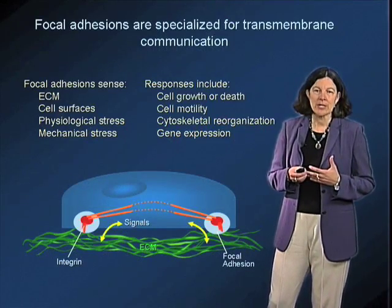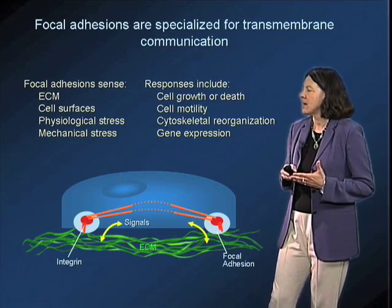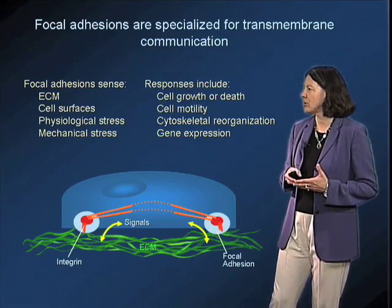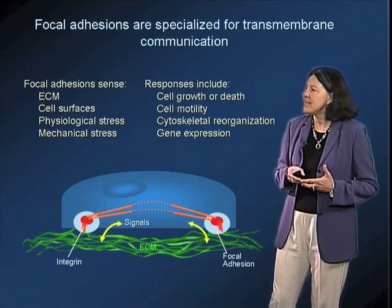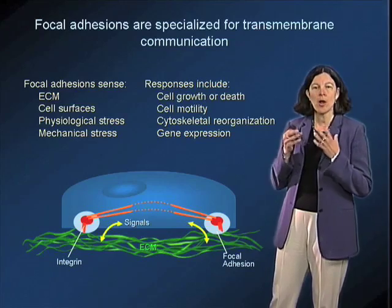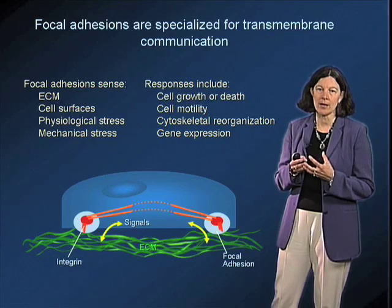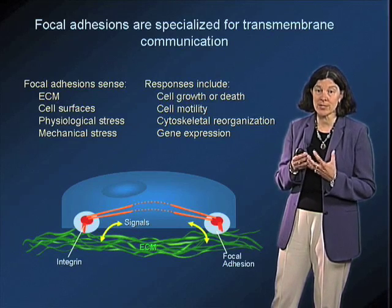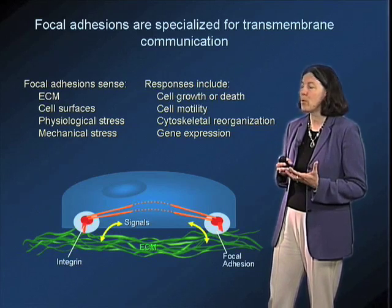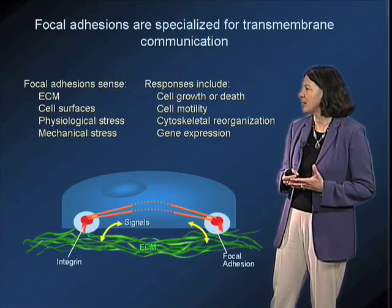Extracellular matrix interaction occurs at specialized zones of the cell surface, which in cultured cells are called focal adhesions. These focal adhesions, as we discussed last time, are areas that are rich in integrin adhesion receptors, and they are playing a really important role in bidirectional transmembrane communication.